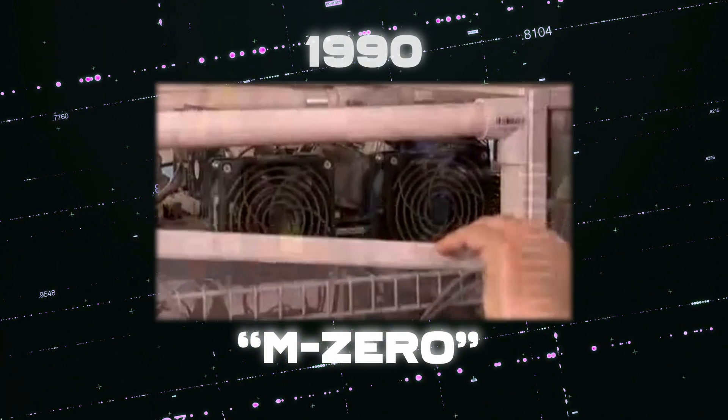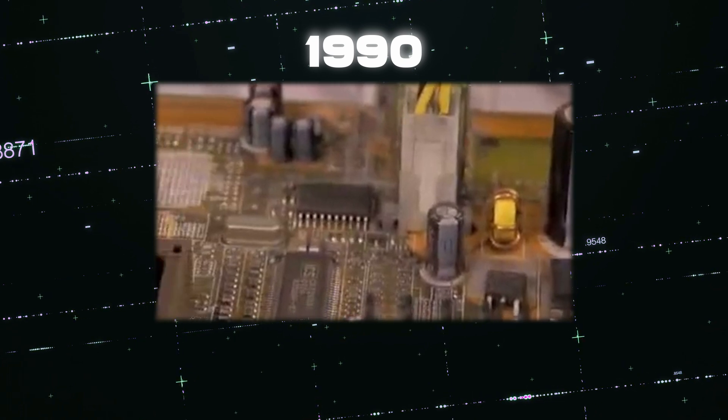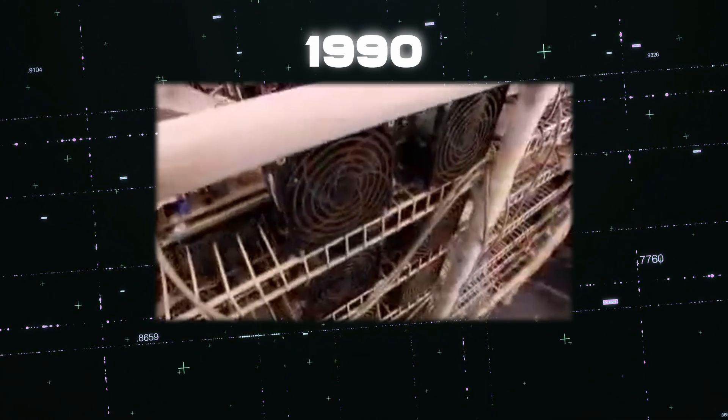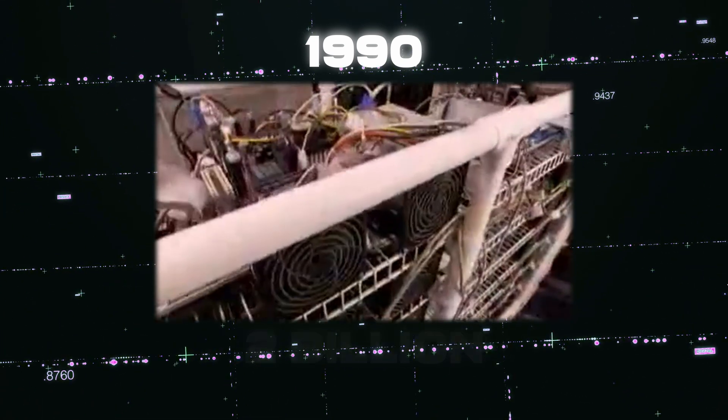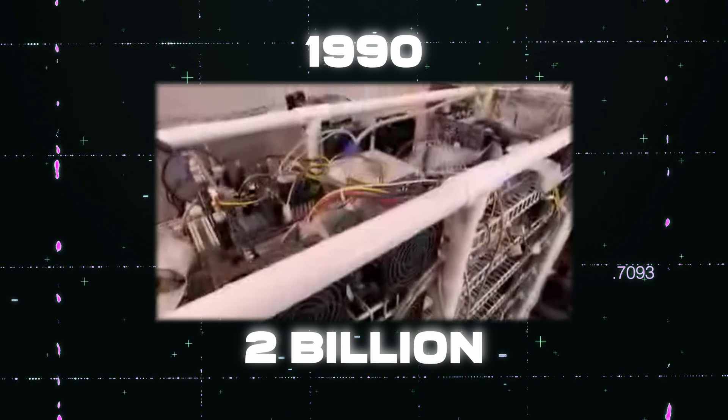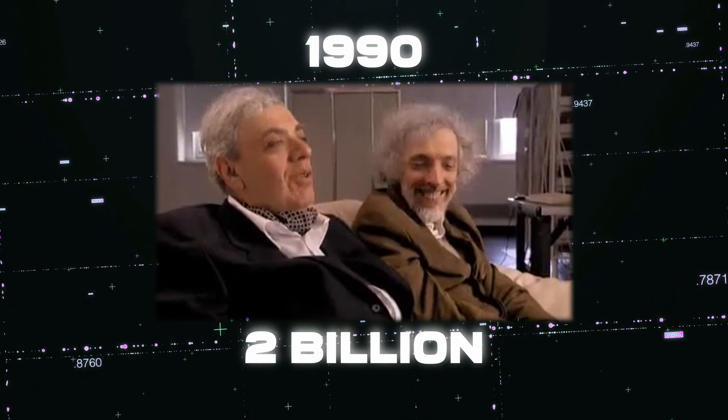By the early 90s, this homemade cluster, rigged up in living room boxes and closets, had powered Pi to 2 billion decimal places. As the New Yorker quipped, the world's most powerful supercomputers include Grigori Chudnovsky's apartment.